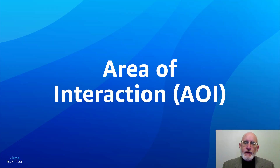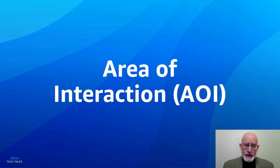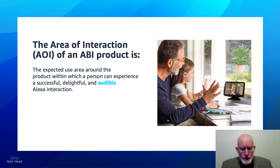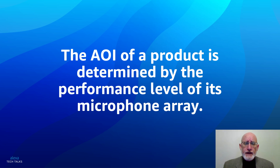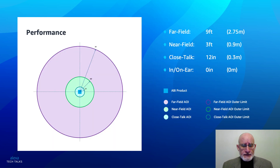Let's talk about the area of interaction, or AOI. The area of interaction of an Alexa built-in product is the expected use area around the product within which a person can experience a successful, delightful, and audible Alexa interaction. The AOI of a product is determined by the performance level of the microphone array. We refer to the performance levels of Alexa built-in products as far-field, near-field, close-talk, and in or on the ear.